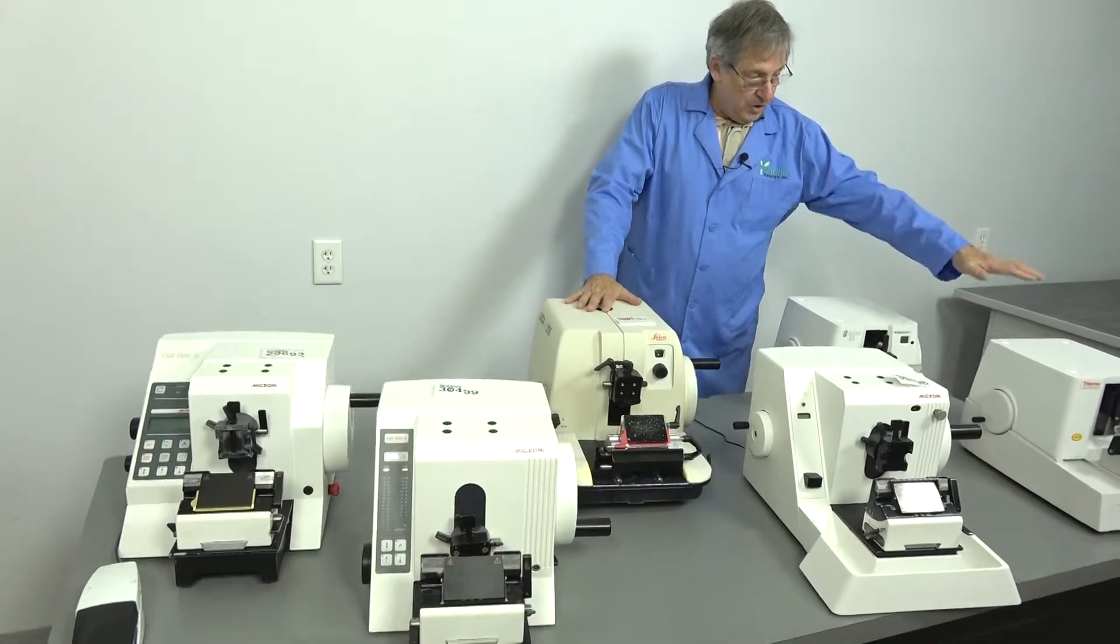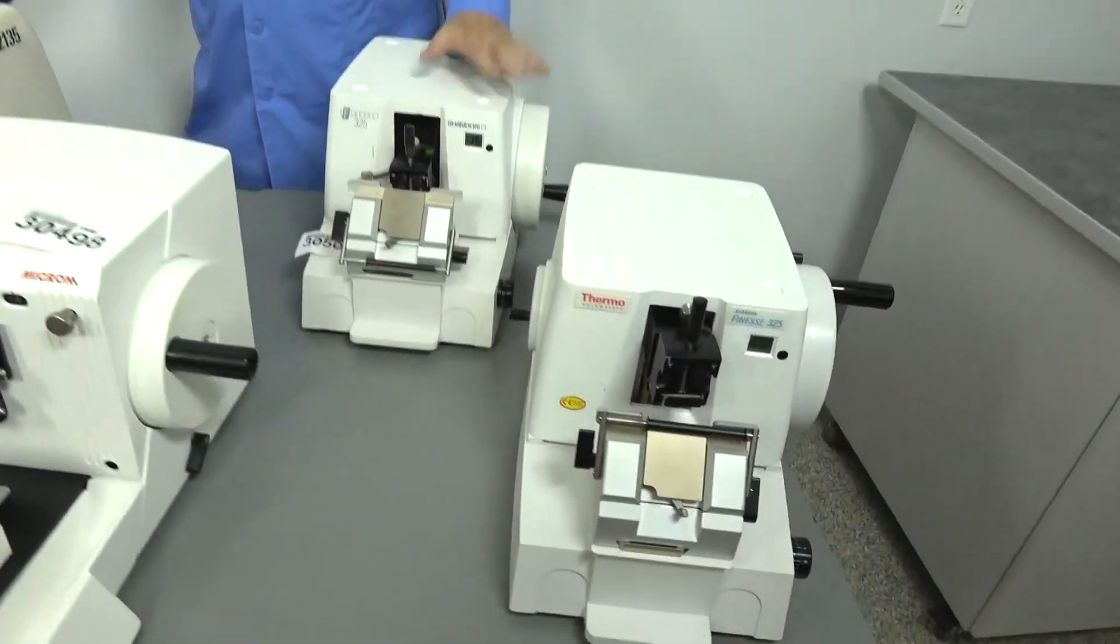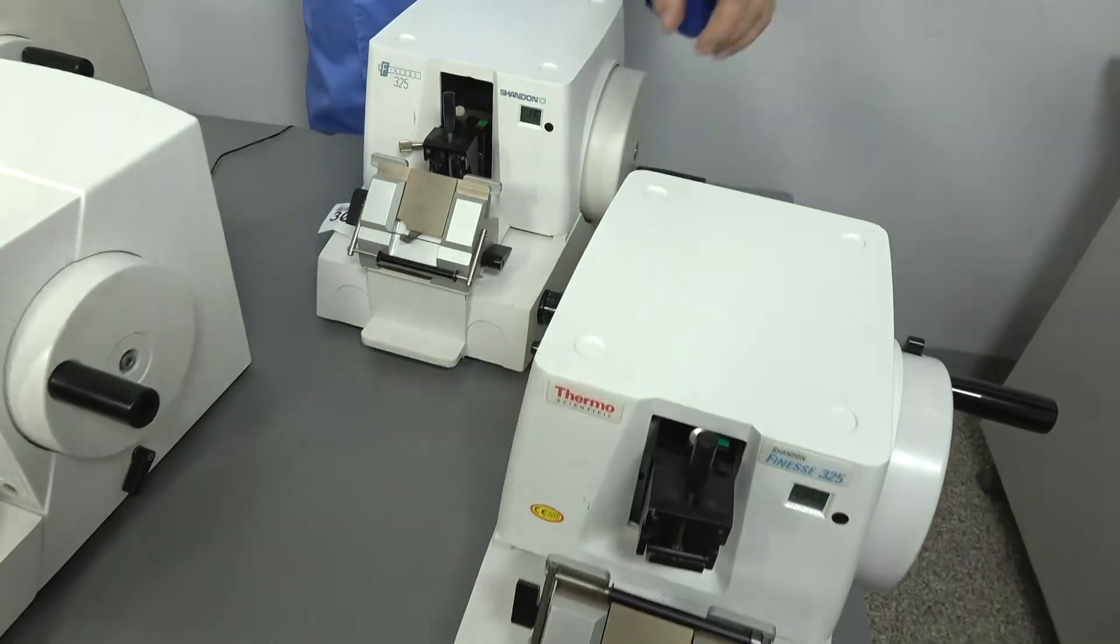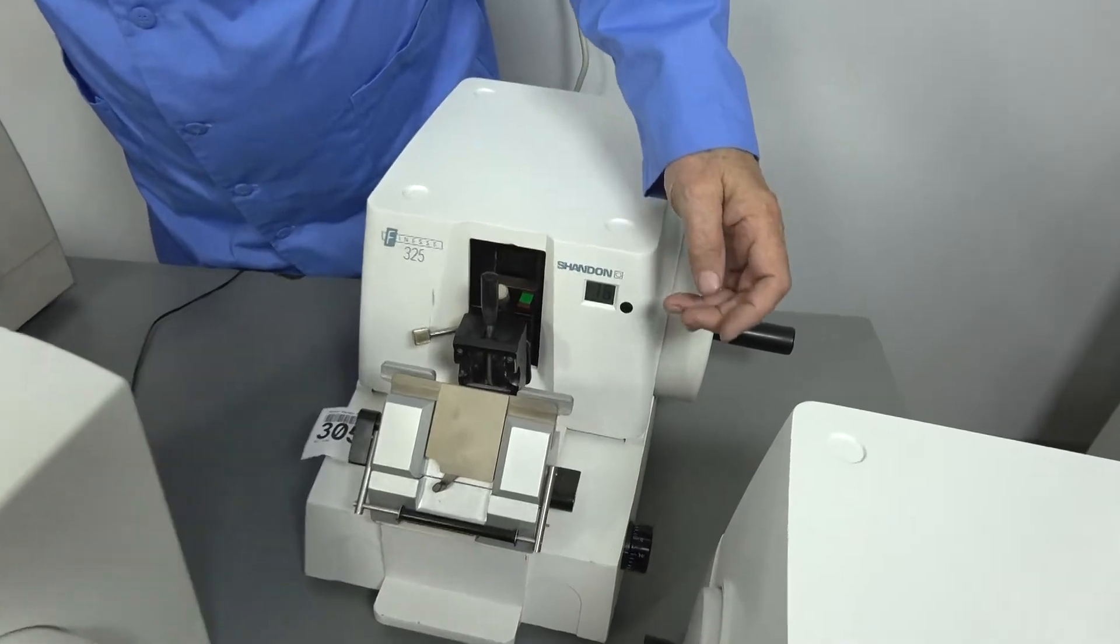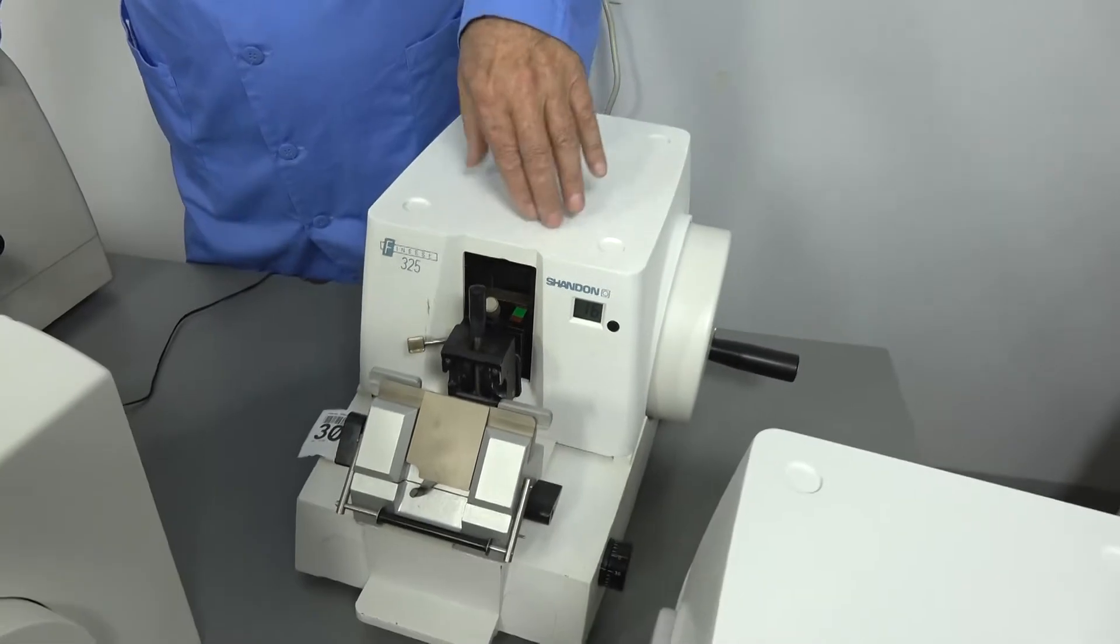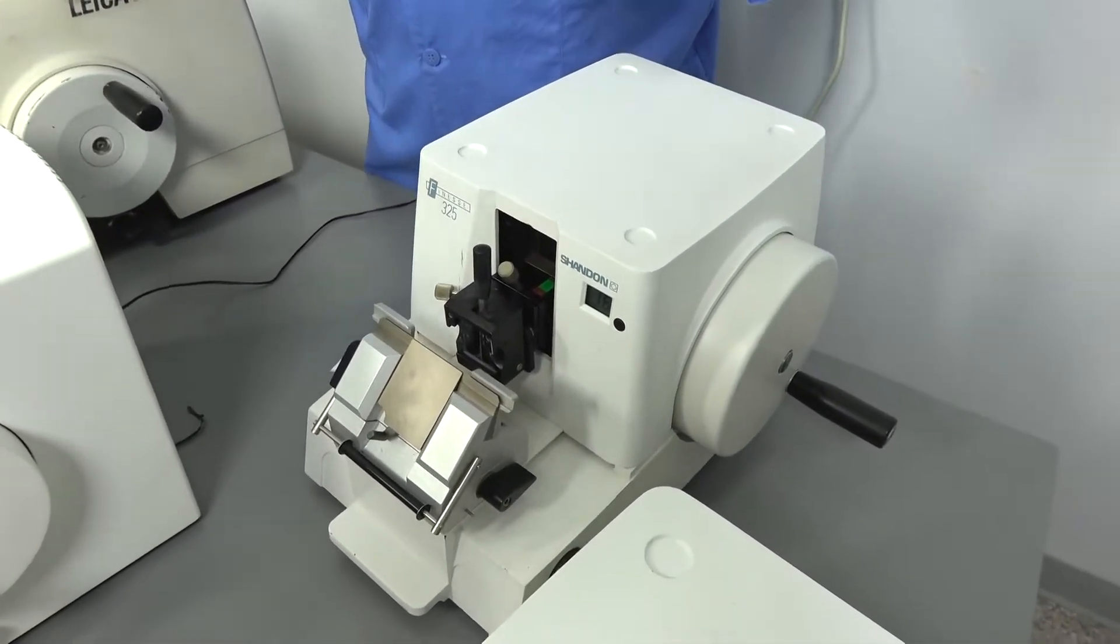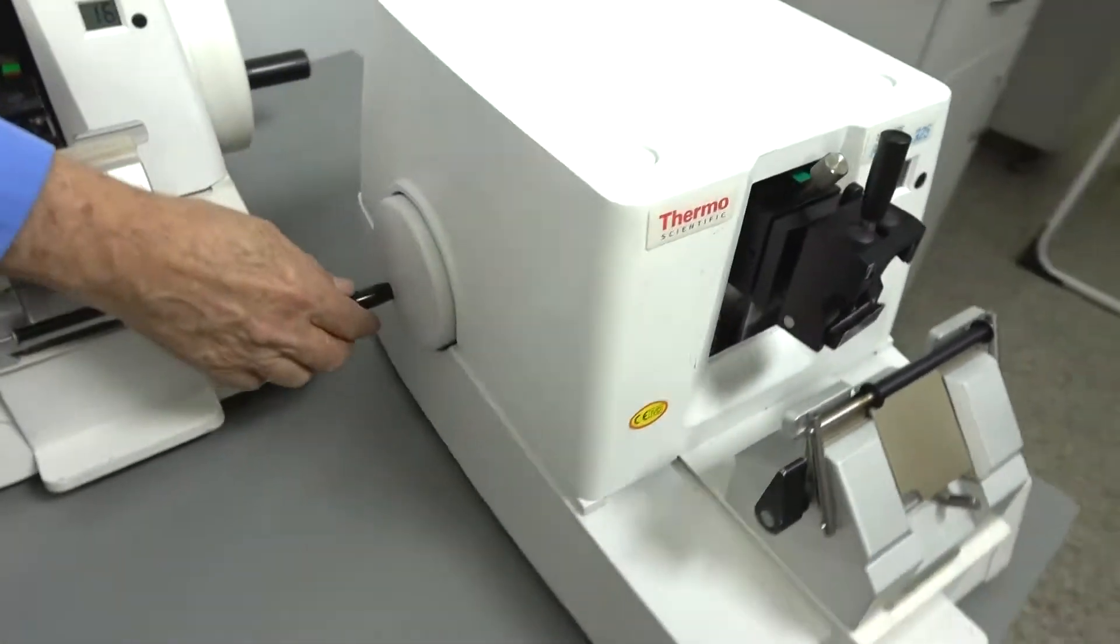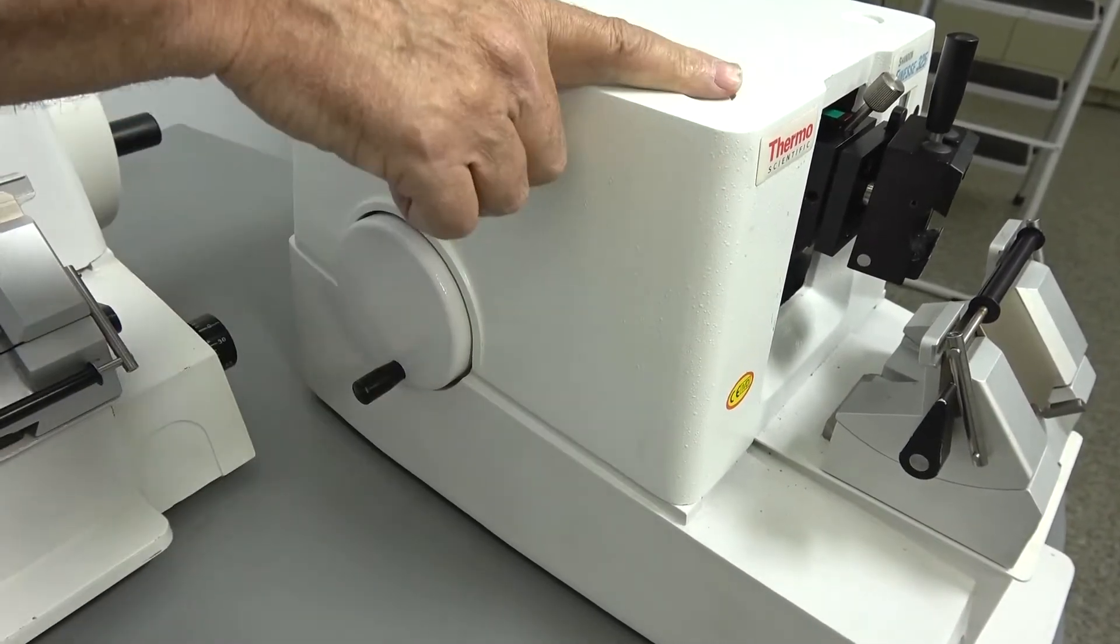Here we have two Shannon Finesse 325s, fully manual microtomes. They require no electricity other than some batteries to run the counter and alarm system. It does alarm when your blade is at your maximum and minimum positions. The blade retraction is done by a knob here to the side, in and out, pulling your knife blade in and out.